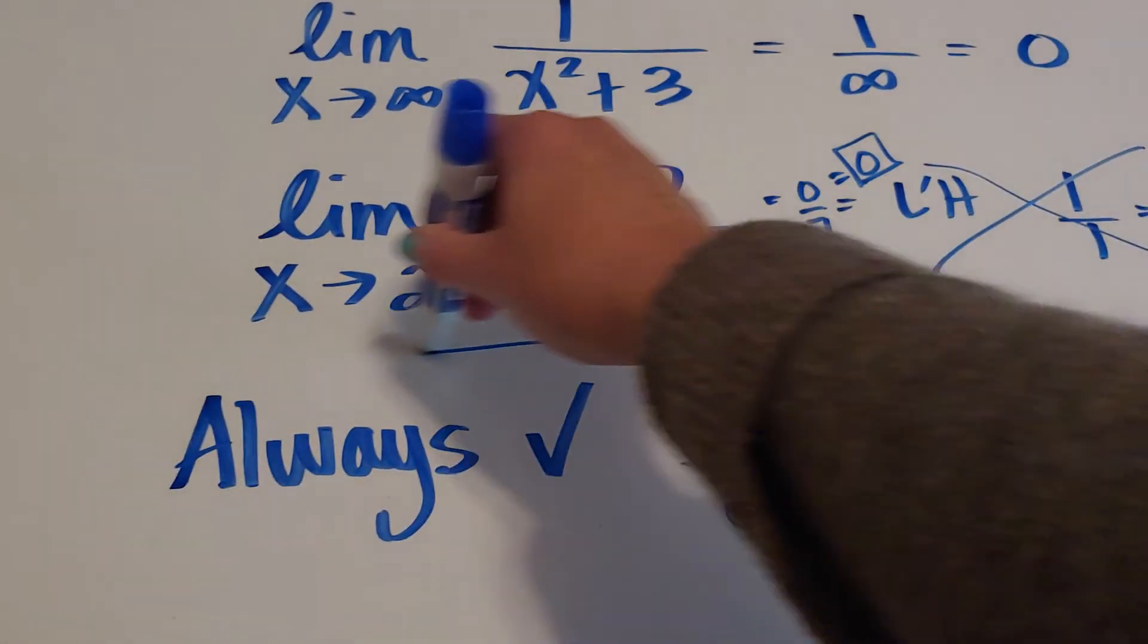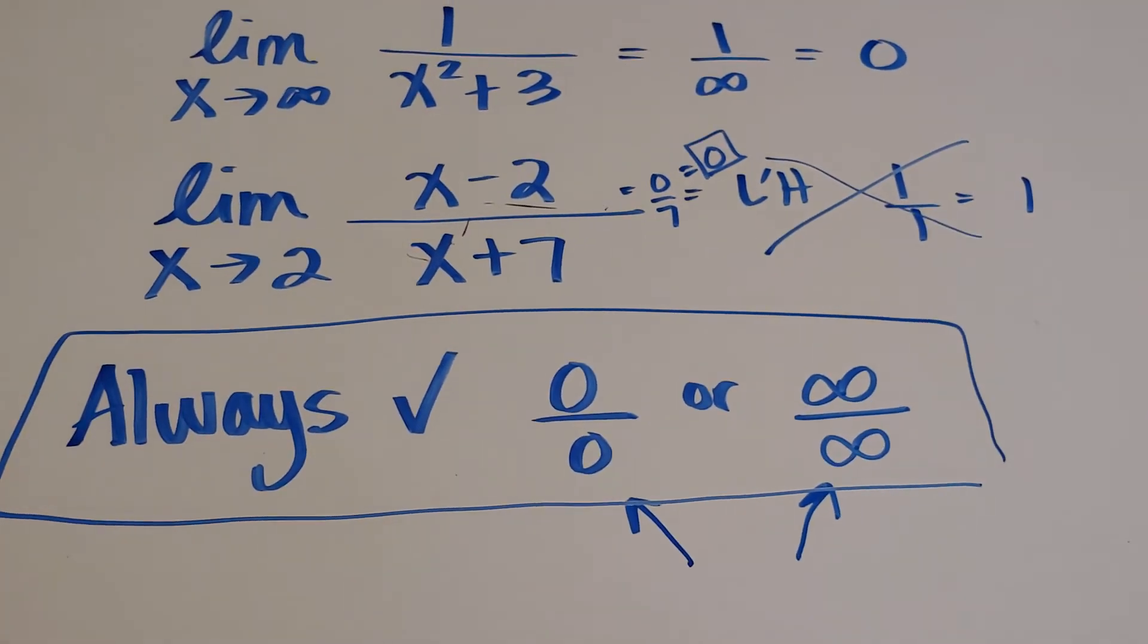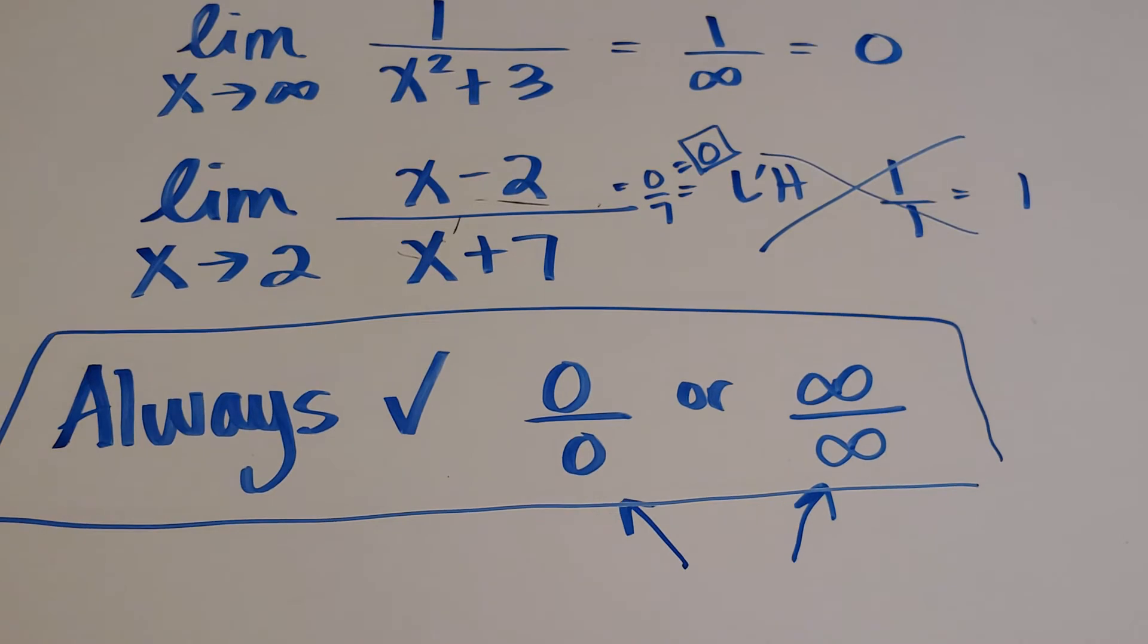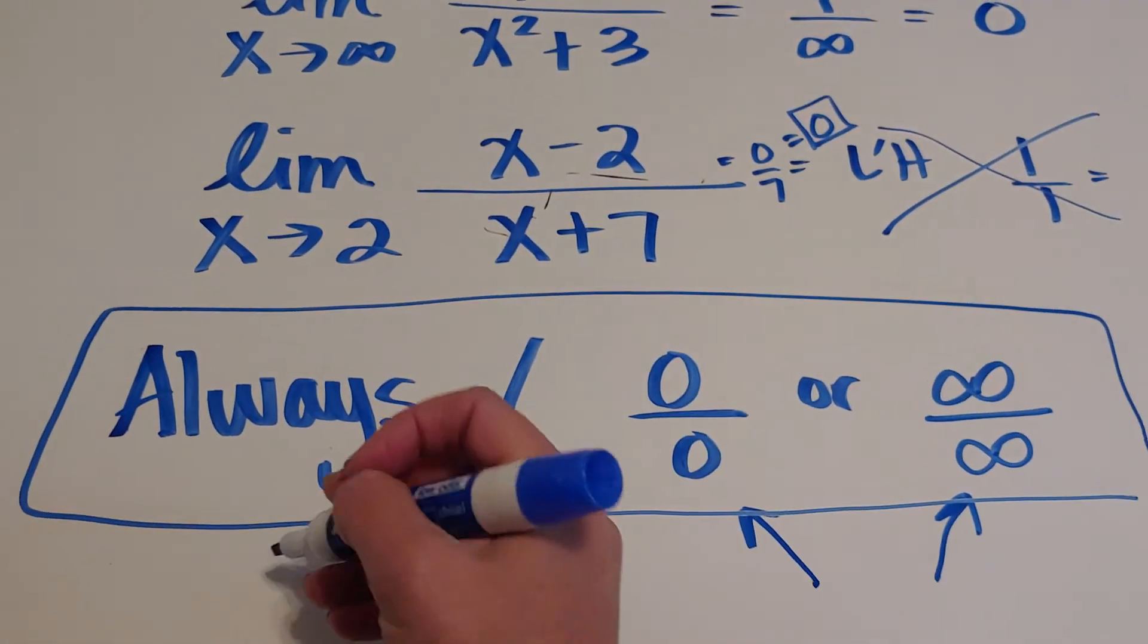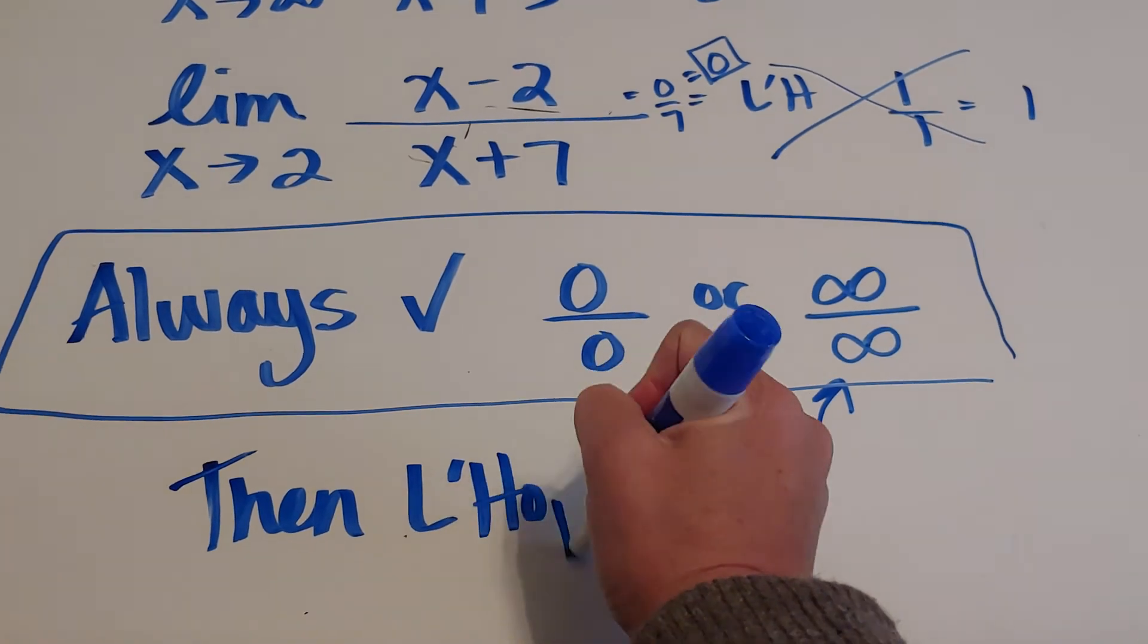So this is always our guide. Our guide is to make sure that I always have a 0 over 0 or infinity over infinity before I use L'Hopital's Rule. If this happens, then you can use L'Hopital's Rule to your heart's content.